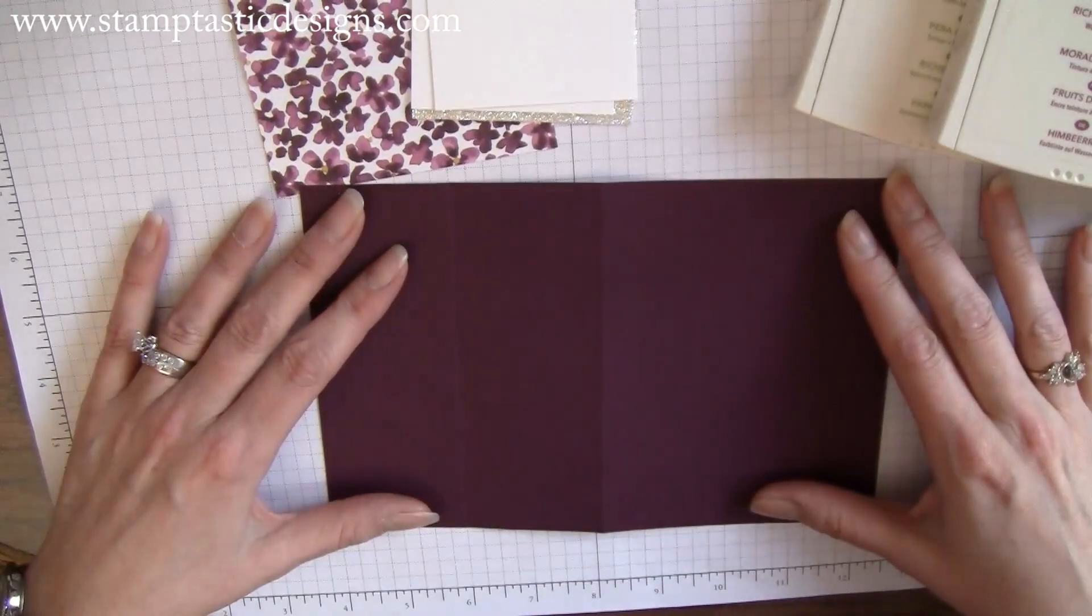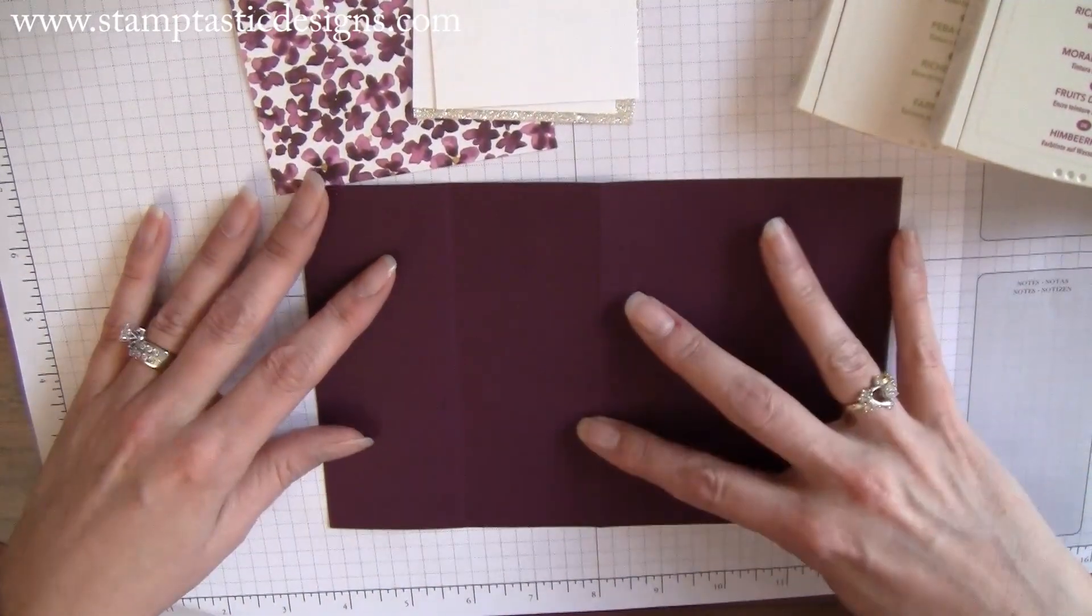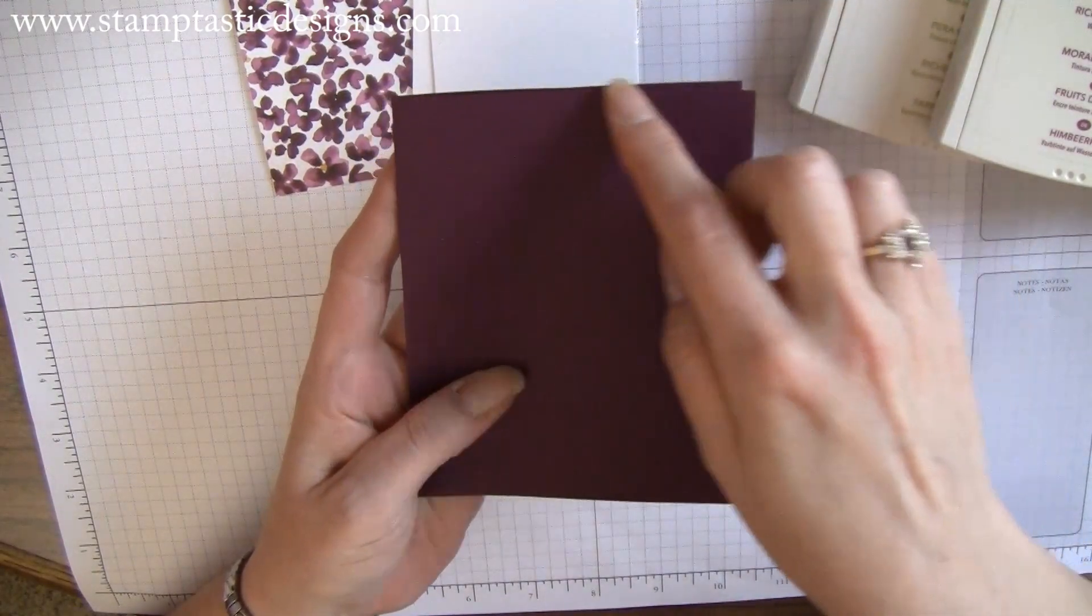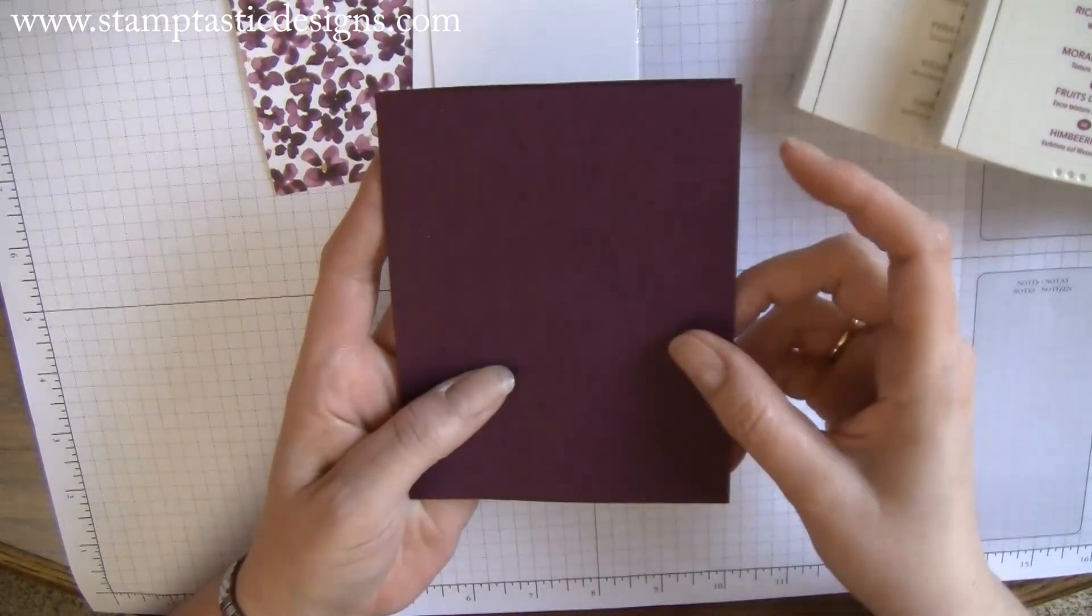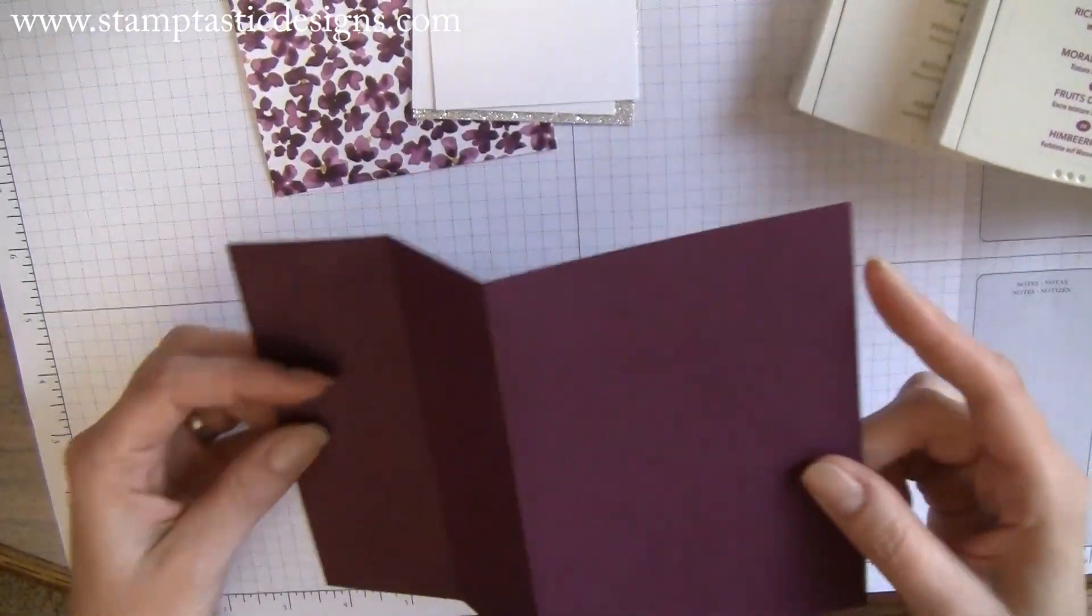I've already got the cardstock cut and scored. This is five and a half by four and a quarter, your regular card size.